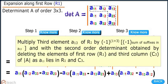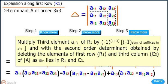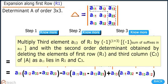Step 3: We multiply the third element A13 of row R1 by (-1)^(1+3), where the exponent is the sum of suffixes in A13, and multiply with the second-order determinant obtained by deleting the elements of first row R1 and third column C3, since A13 lies in R1 and C3.